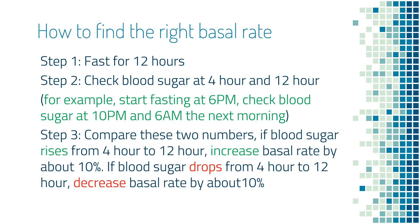If your blood sugar goes up from 4 hours to 12 hours, you need to increase basal rates by about 10%. If your blood sugar goes down from 4 hours to 12 hours, you need to decrease basal rates by about 10%. The reason for fasting 4 hours before the first blood sugar check is to make sure that food will not affect your blood sugar for the 8 hours between the two blood sugar checks.